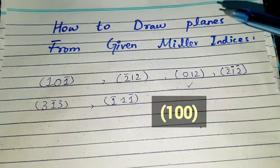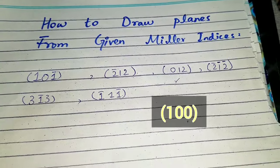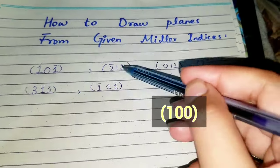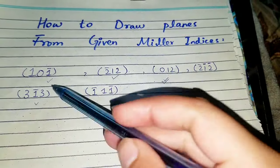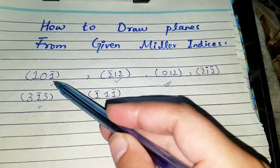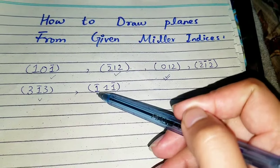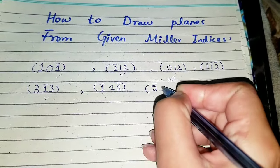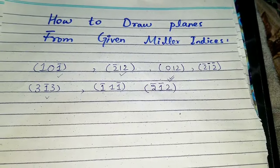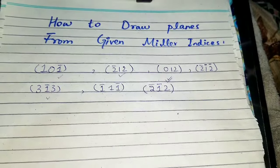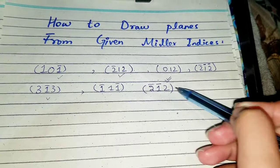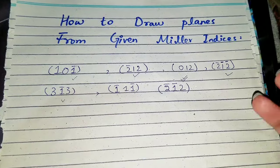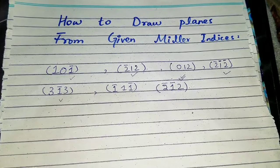Hello everyone! In this video we'll see how to draw planes from given Miller indices. The sets are of all kinds — planes with all positive Miller indices, planes with one index negative, two indices negative, and all indices negative. This video will completely cover all kinds of problems, and the method displayed here can be used for any kind of Miller indices set given to you.